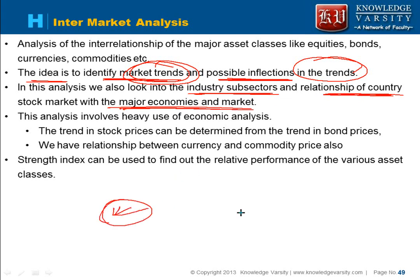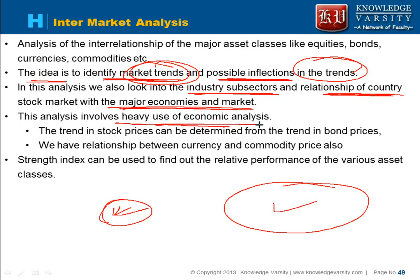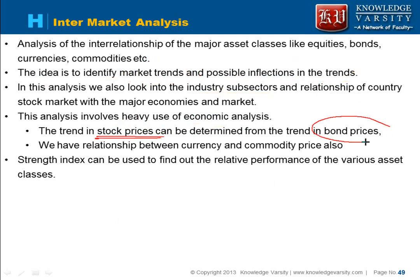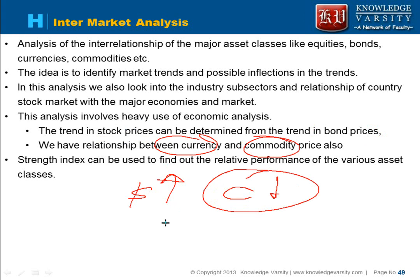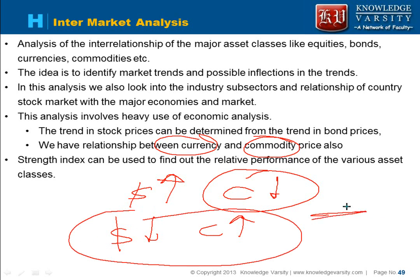A country's stock market is not viewed in isolation — it is analyzed with respect to major economies. This involves heavy use of economic analysis. For example, by observing trends in bond prices, we can determine trends in stock prices. There is also a relationship between currency and commodity: when the dollar becomes stronger, commodity prices soften; when the dollar weakens, commodity prices increase, because people want more in domestic currency.